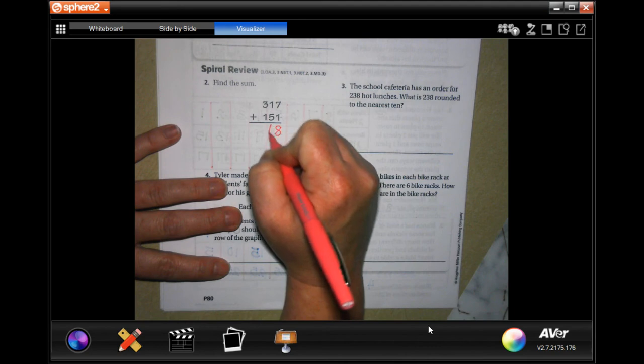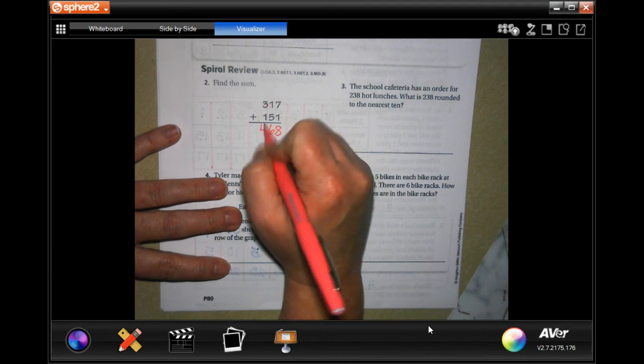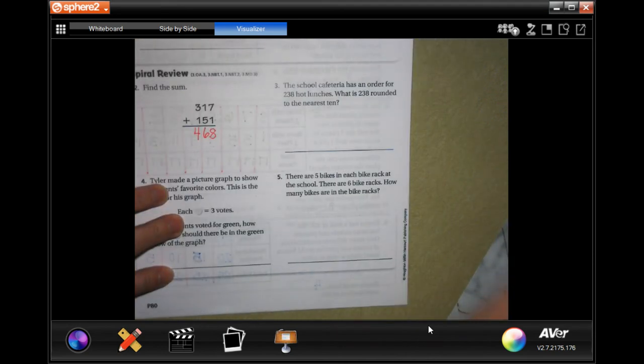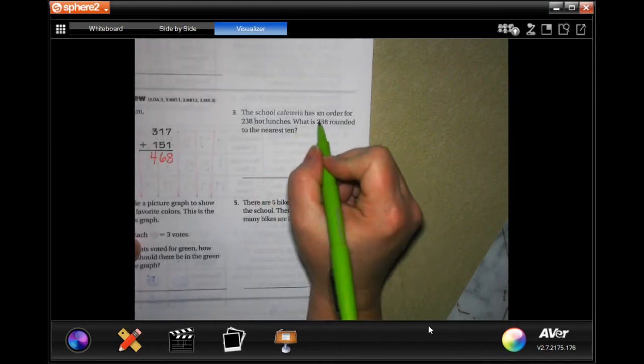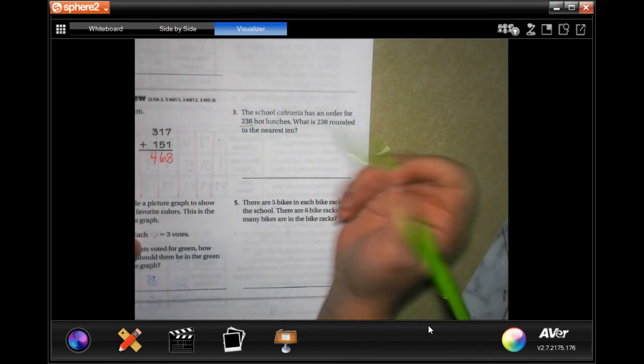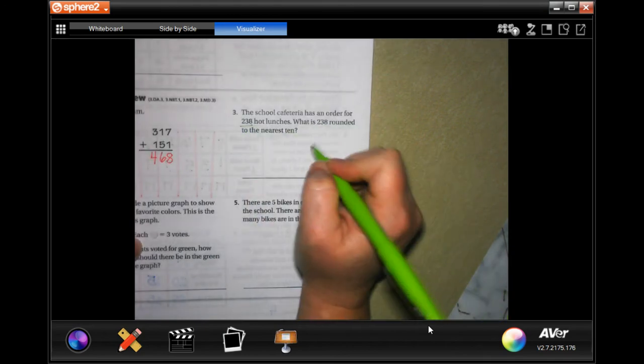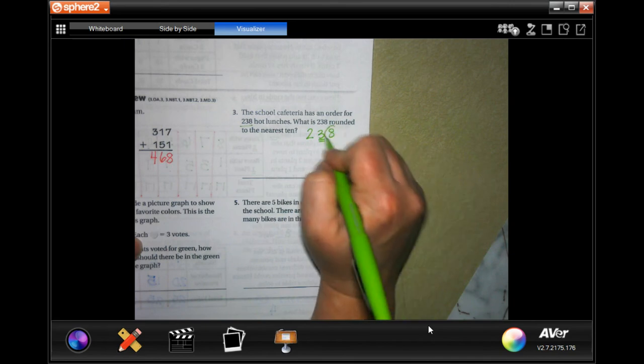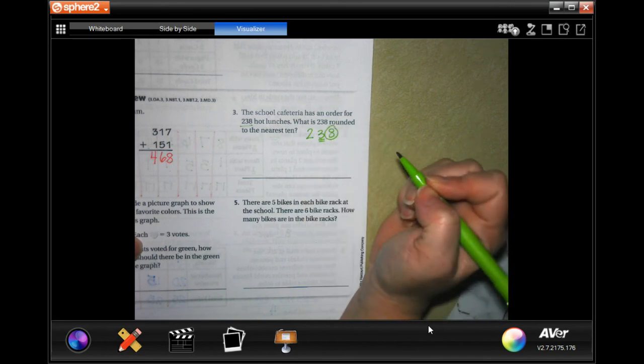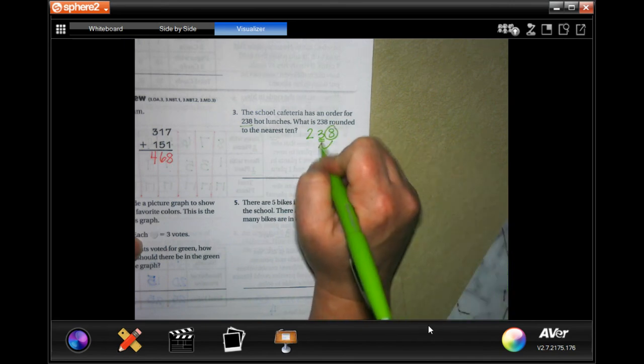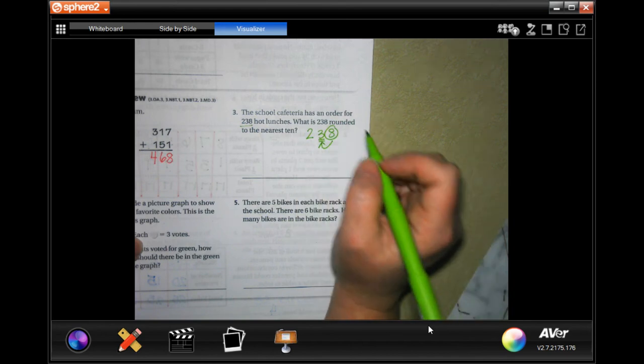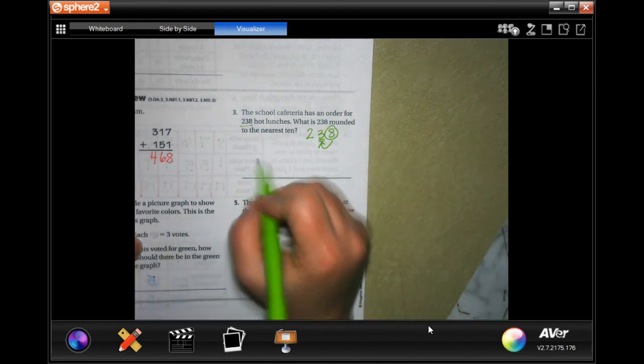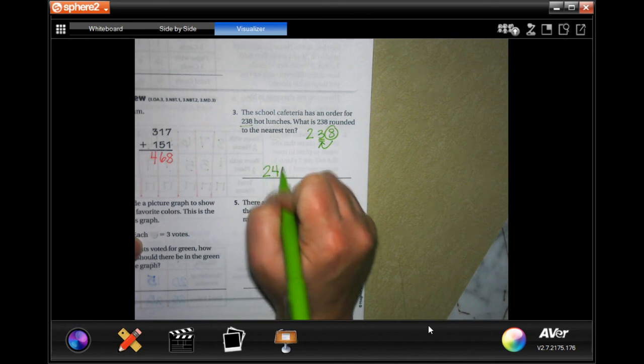The school cafeteria has an order for 238 hot lunches. What is 238 rounded to the nearest 10? Two three eight. We need to round to the nearest 10, so I need to look at the last number here. If it's five or bigger than five, the three goes up to a four. If it's four or smaller, it stays a three. Eight is bigger than five, so we're going to wind up with 240.